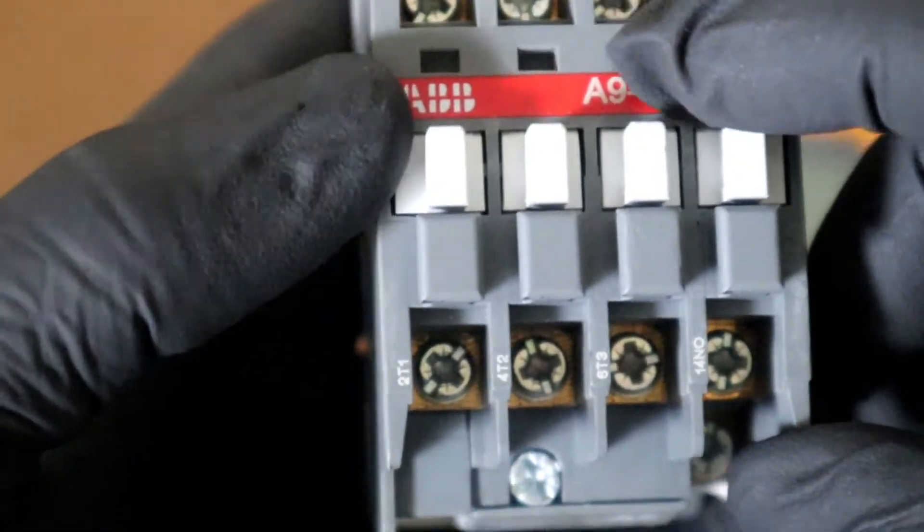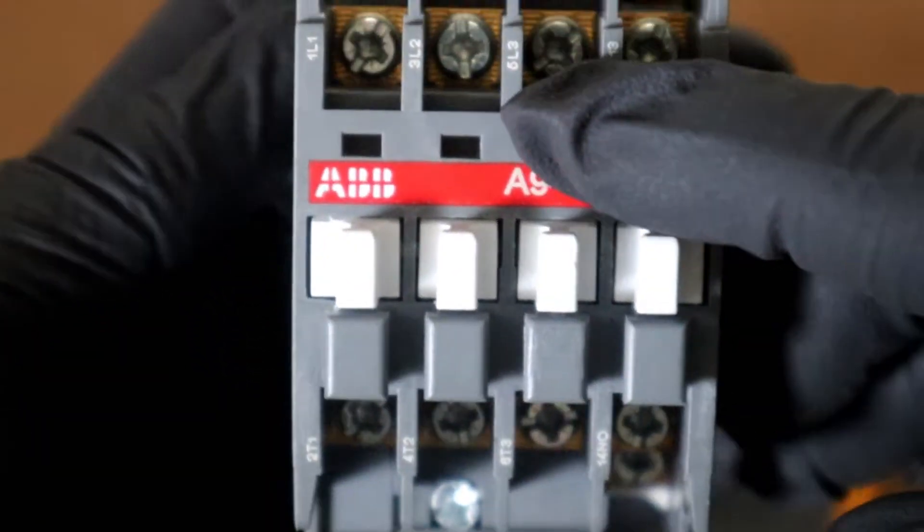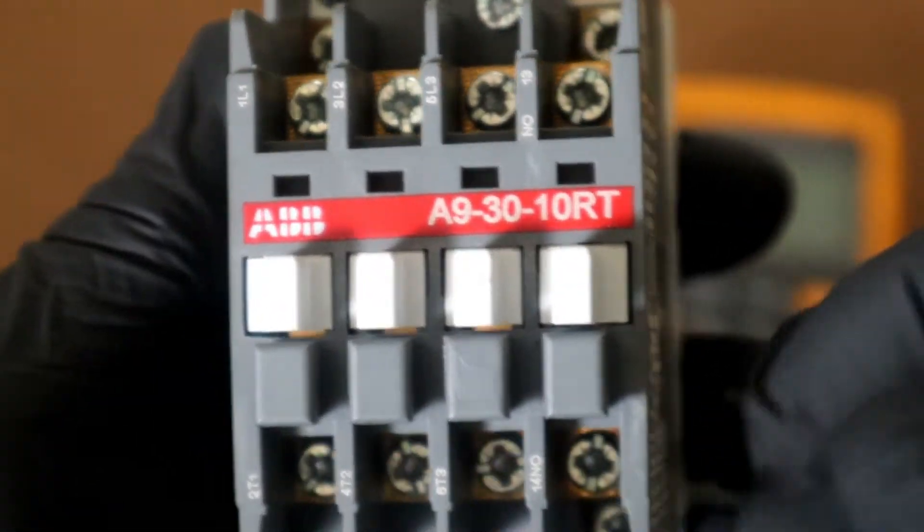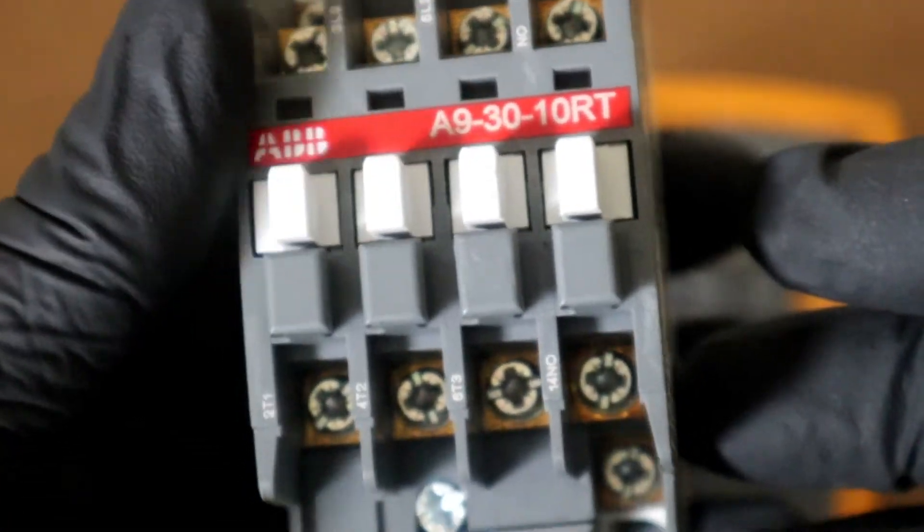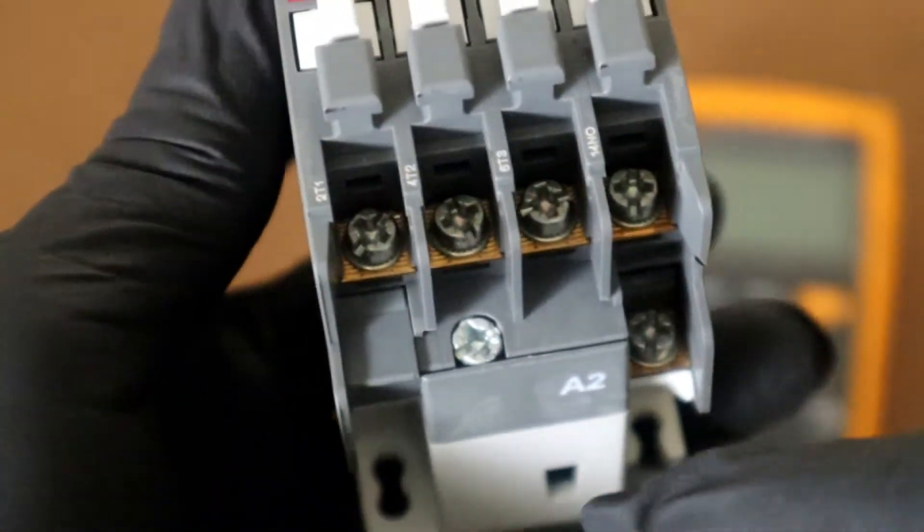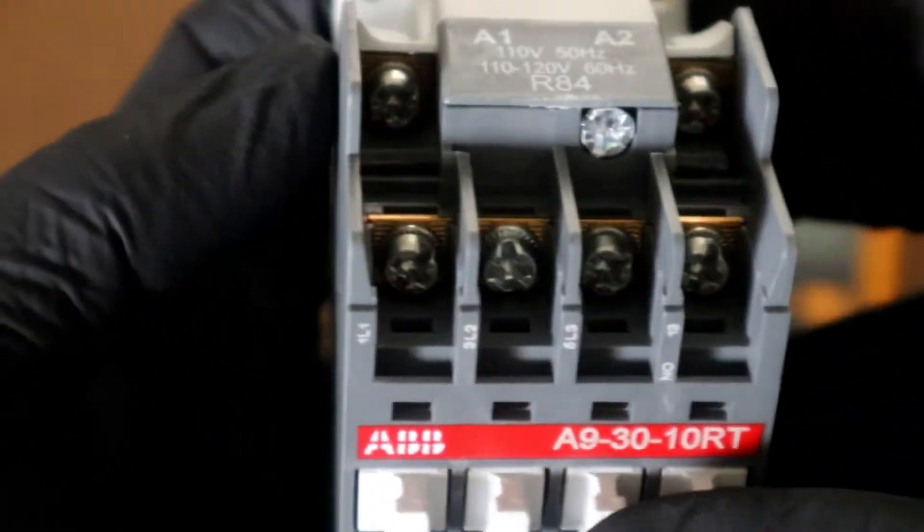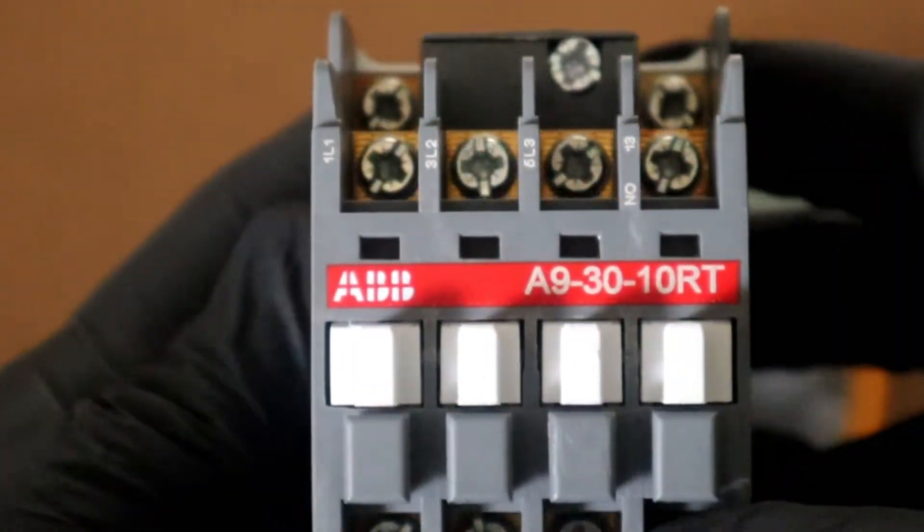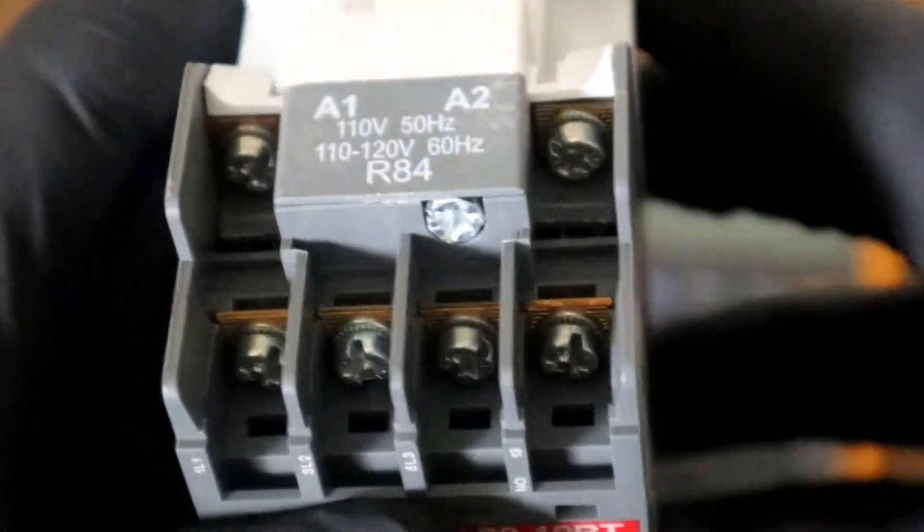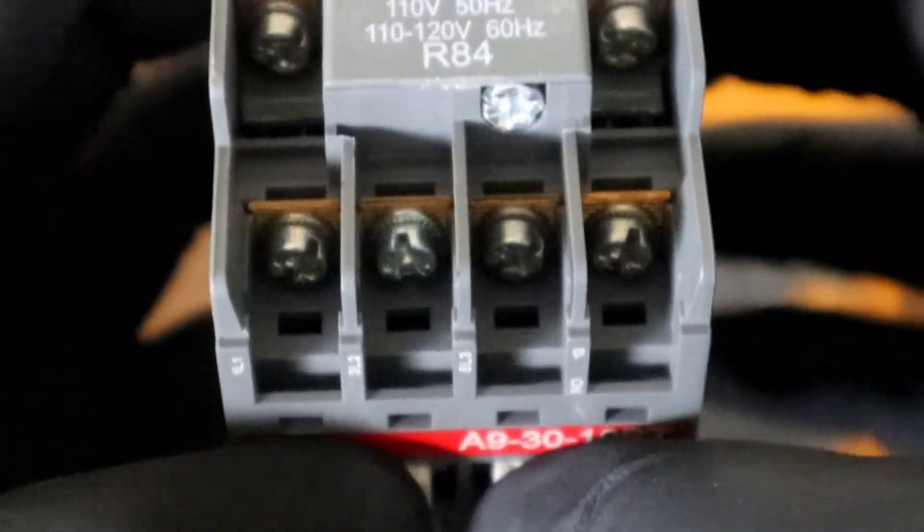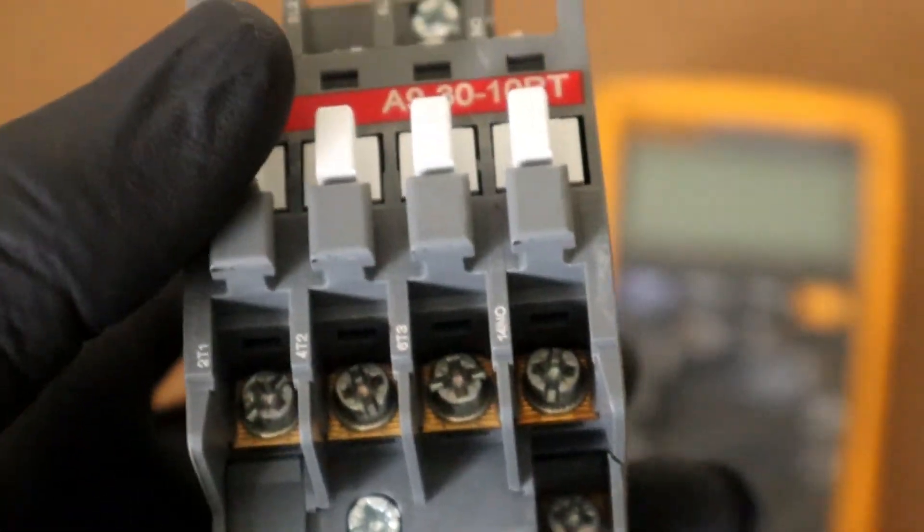These high current contacts can fail in an open position, burnt or melted as a result of a contactor being undersized or a result of a shorted load creating a high current situation. We have many different instances which can cause a contactor to fail. As well as dust, dirt can prevent the complete operation of our contactor and many more factors.